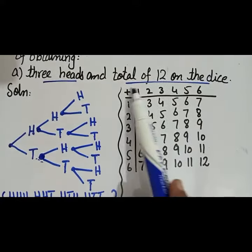Here you have to find out the probability of what? Probability of three heads and total twelve, that is mentioned in the question. Three heads and total of twelve on the dice. So the probability of three heads here - three heads is only one time.